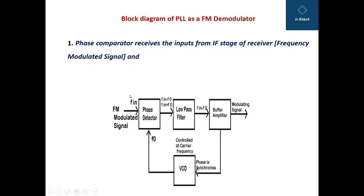As you can see in the diagram, this is the block diagram of PLL as FM demodulator. The phase comparator — that is, the phase detector — receives inputs from the IF stage, that is the intermediate frequency stage of the receiver. This is the signal F-in, which is actually the frequency modulated signal, meaning the signal whose modulation is already done with the carrier.